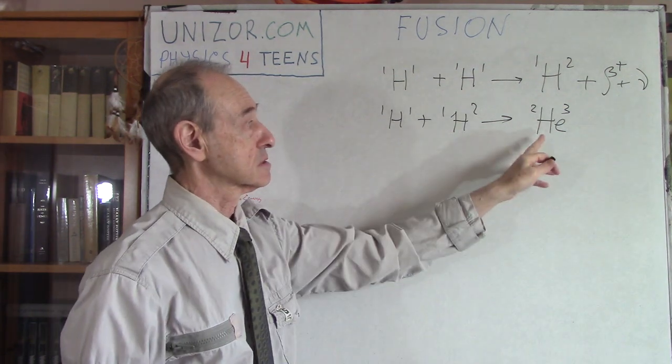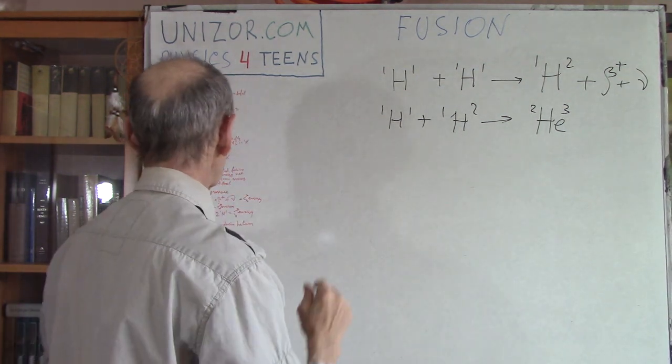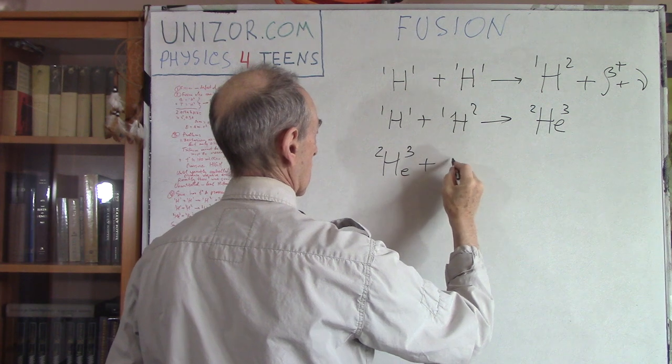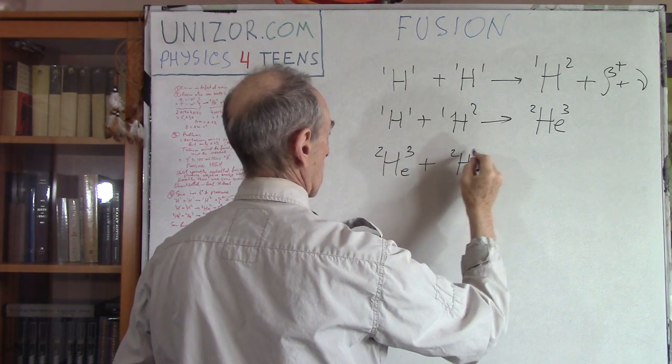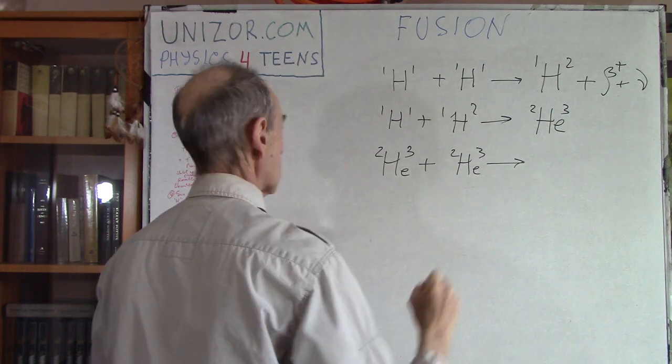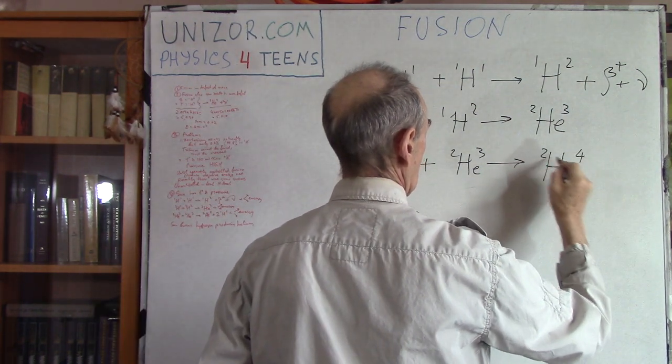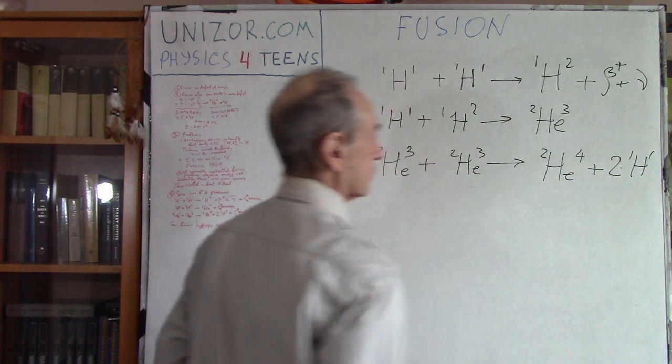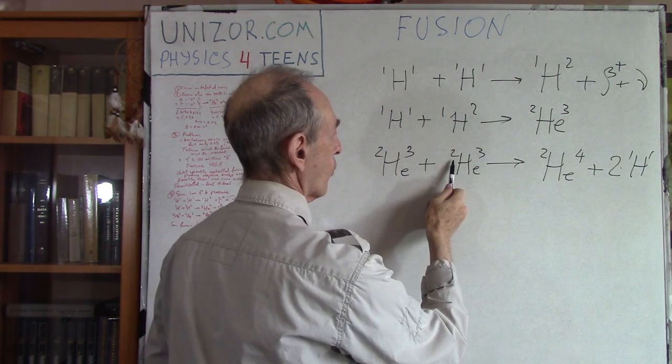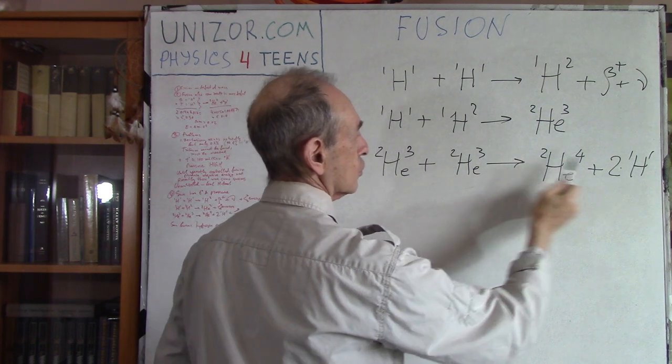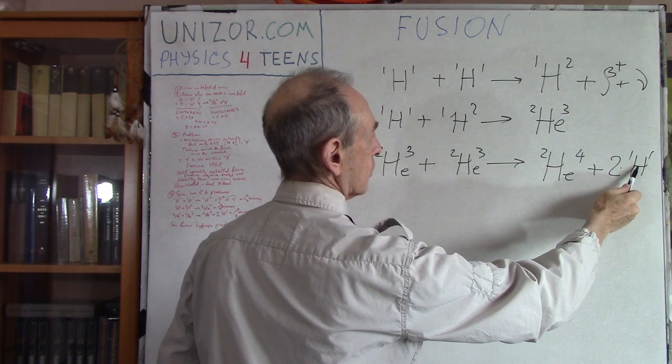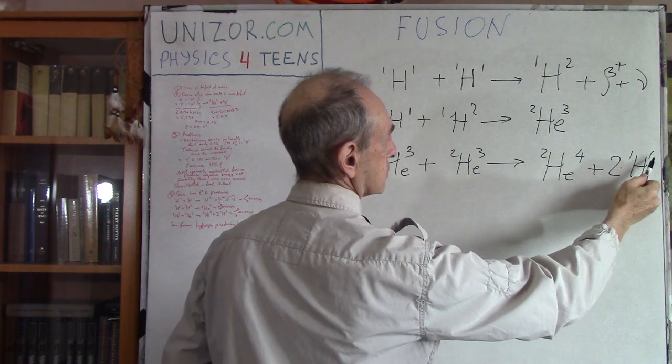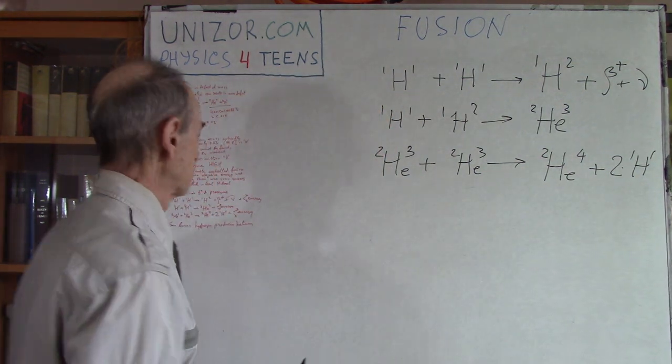However, it's helium because it has two protons. Now the next one is two isotopes of helium-3 producing regular helium plus two atoms of regular hydrogen. Two plus two is four, so we have a charge of four. Two plus one and one, that's four. Total number of particles is six, three and three. This is four and this is one and one. So we have the balance.